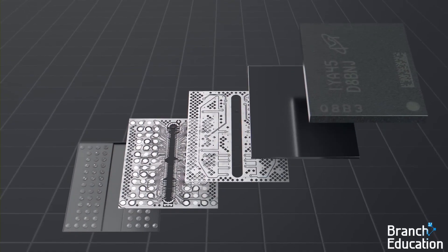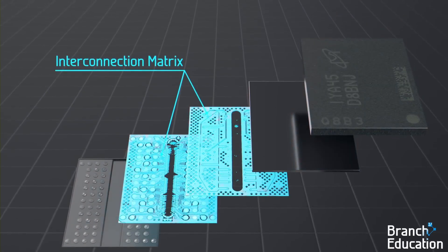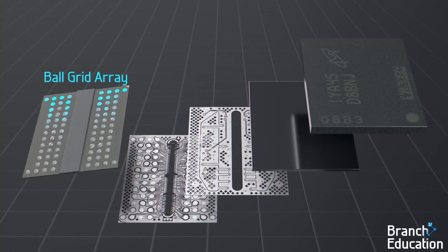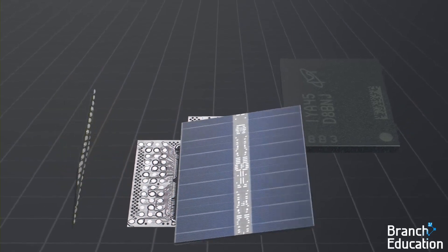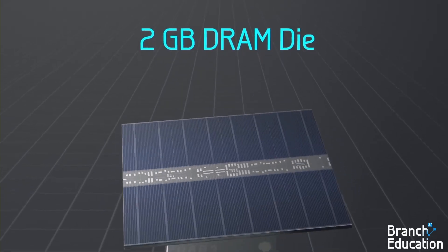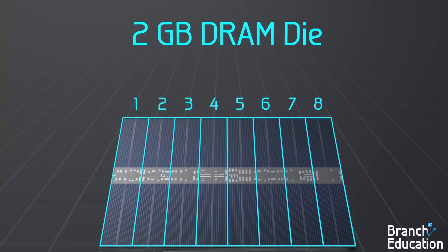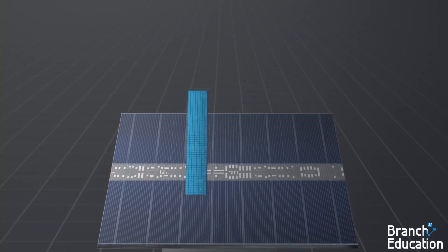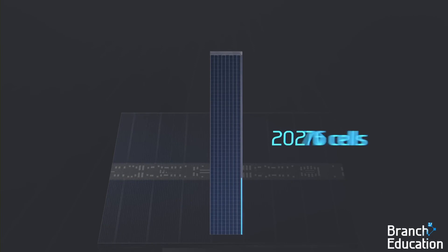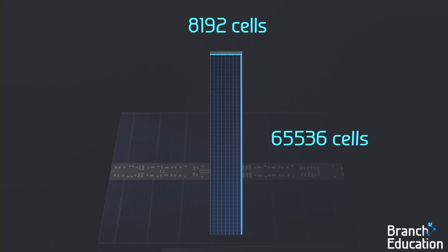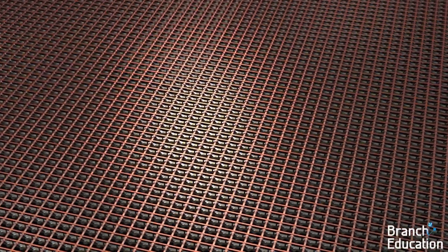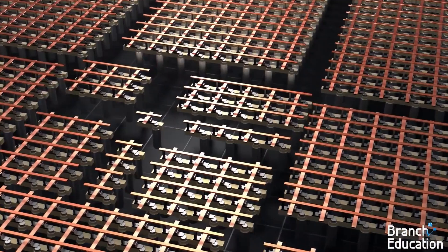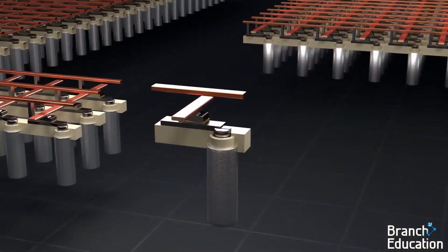Let's open and look inside one of these DRAM microchips. Inside the exterior packaging, we find an interconnection matrix that connects the ball grid array at the bottom with the die, which is the main part of this microchip. This 2GB DRAM die is organized into 8 bank groups, composed of 4 banks each, totaling 32 banks. Within each bank is a massive array: 65,536 memory cells tall by 8,192 cells across.